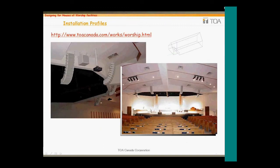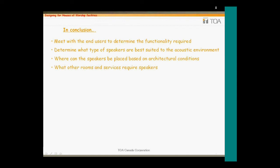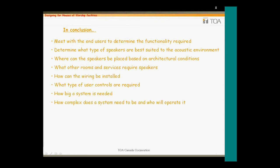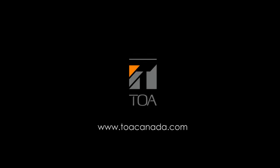You can view our installation profiles by visiting our website at toacanada.com. In conclusion: meet with the end users to determine the functionality required; determine what type of speakers are best suited to the acoustic environment; consider where speakers can be placed based on architectural conditions; determine how rooms and services require audio systems; consider how wiring can be installed; what type of user controls are required; and how complex the system needs to be. It's all about the spoken word — intelligibility is the key. Cost is always a concern, but put in the right system once, not the wrong system three times. Allow TOA Canada to help with the design and any software programming. That concludes our webinar on Houses of Worship — I hope you can take away something of value from this.